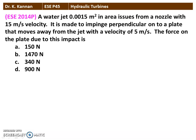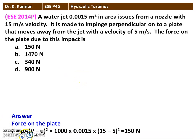The next question from the 2014 question paper: a water jet of 0.0015 m² area issues from a nozzle at 15 m/s velocity, impinging perpendicularly onto a plate moving away from the jet at 5 m/s. The force on the plate is calculated using the same formula: F = ρA(V − u)² = 1000 × 0.0015 × (15 − 5)² = 150 Newton. The answer is option A, 150 Newton.